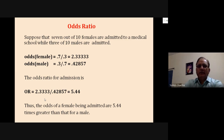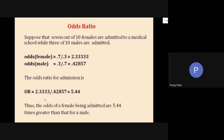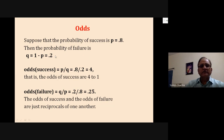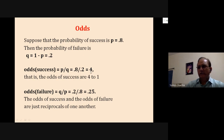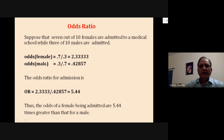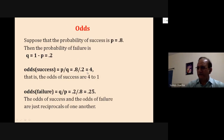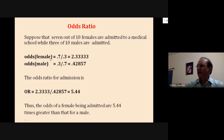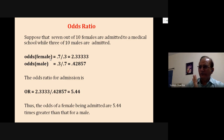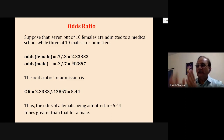Odds is not probability. Odds of success is probability of success divided by probability of failure — for a single group like female. Similarly, odds for male = success of male divided by failure of male. Then take the ratio of the two to get the odds ratio. Odds ratio is computed for case-control studies. Relative risk is computed for cohort or prospective studies, using incidence rates: A/(A+B) divided by C/(C+D).